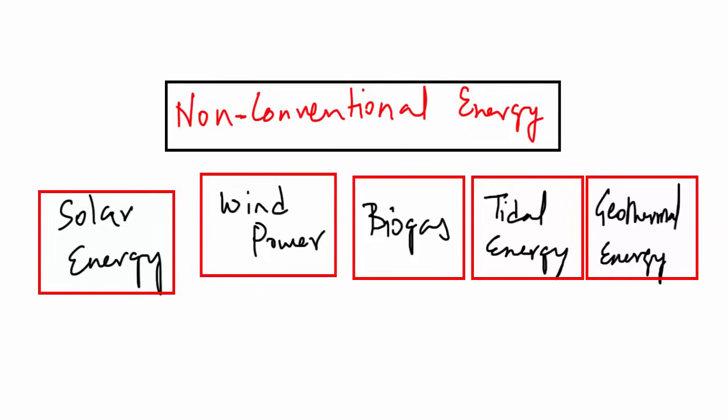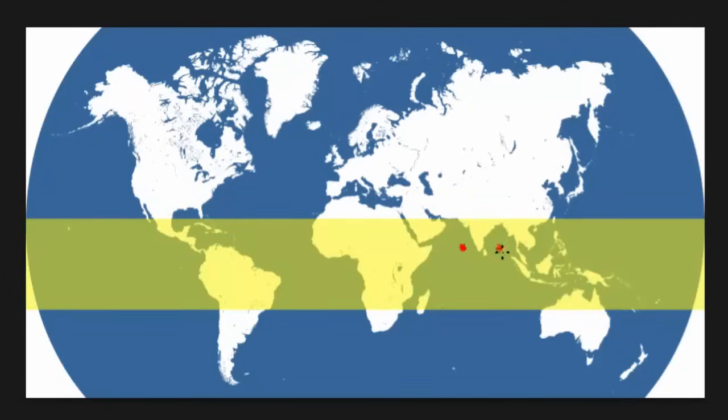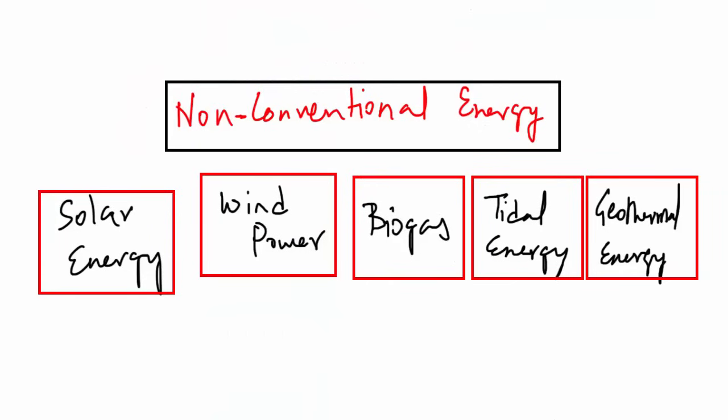The energy generated by using wind, tides, solar, geothermal heat, and biomass is referred to as non-conventional energy. These energy sources are renewable and ecologically safe. India is blessed with an abundance of sunlight, water, wind, and biomass. Now let's read about some of the non-conventional sources of energy.